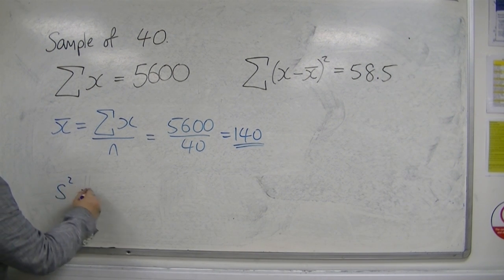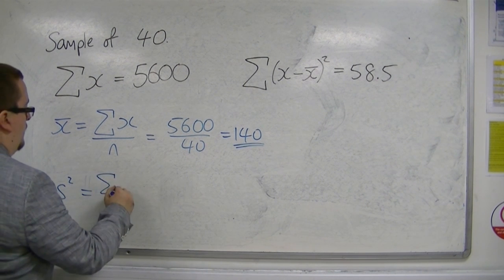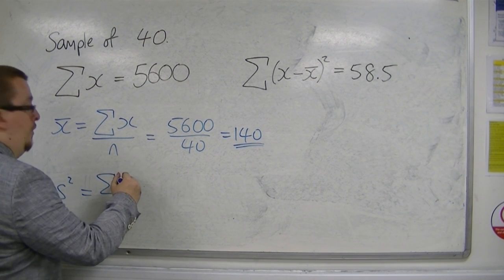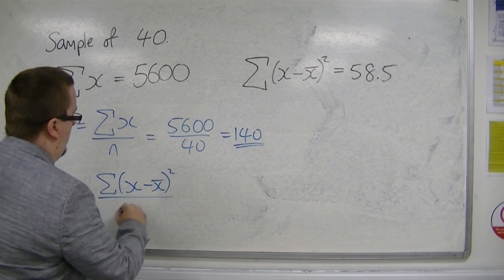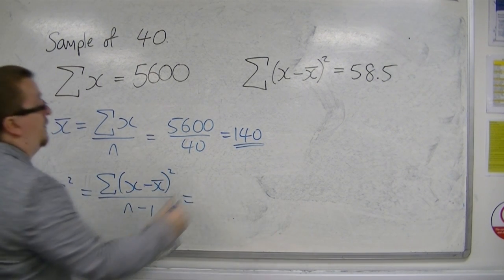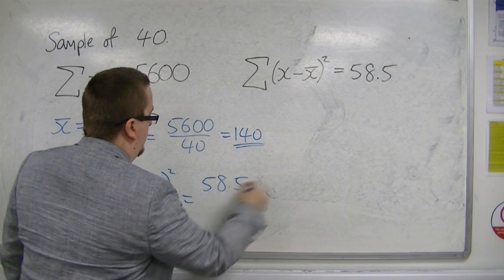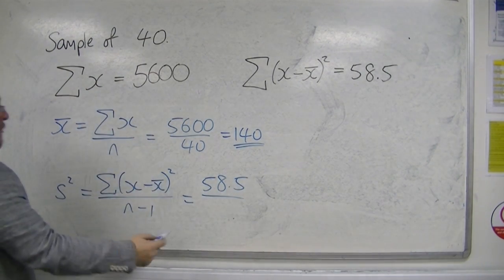For the variance, that is sigma of x minus x-bar all squared over n minus 1. So in this case, it's 58.5 divided by 40 minus 1, so 39.